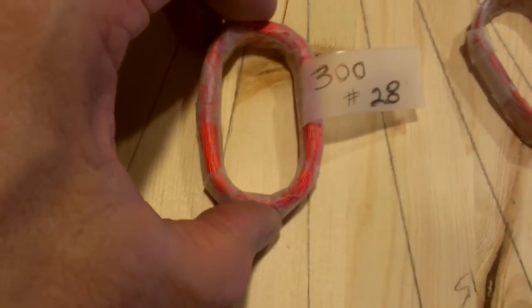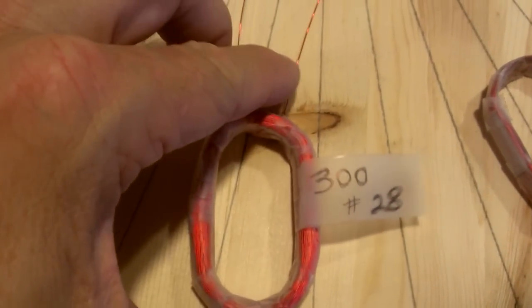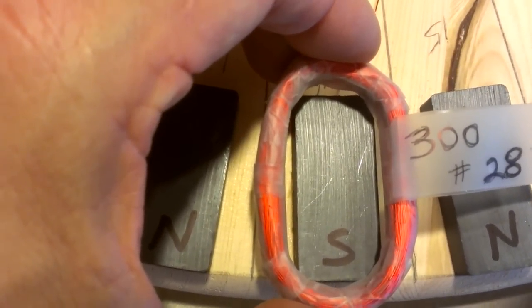This is wrapped 300 times but it's with a little bit heavier gauge wire, it's number 28. And this coil is just a little bit larger than the magnet so it ought to be interesting how this turns out with the power output.